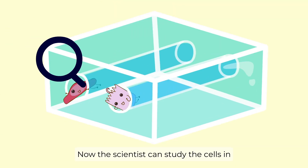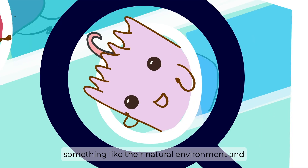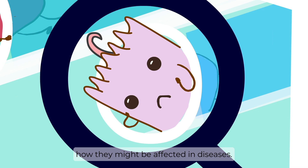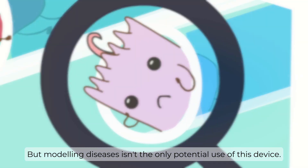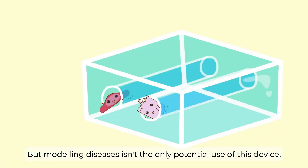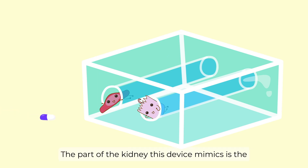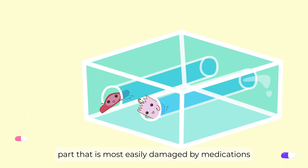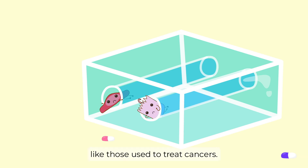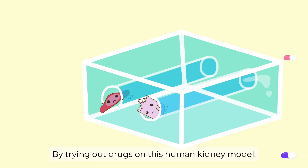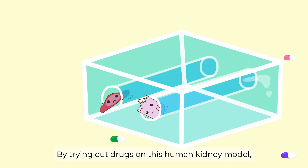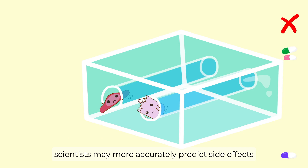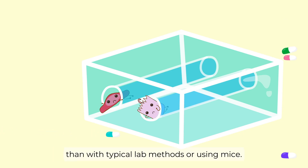Now, the scientist can study the cells in something like their natural environment, and she can look at key kidney functions and how they might be affected in diseases. But modeling diseases isn't the only potential use of this device. The part of the kidney this device mimics is the part most easily damaged by medications like those used to treat cancers. By trying out drugs on this human kidney model, scientists may more accurately predict side effects than with typical lab methods or using mice.